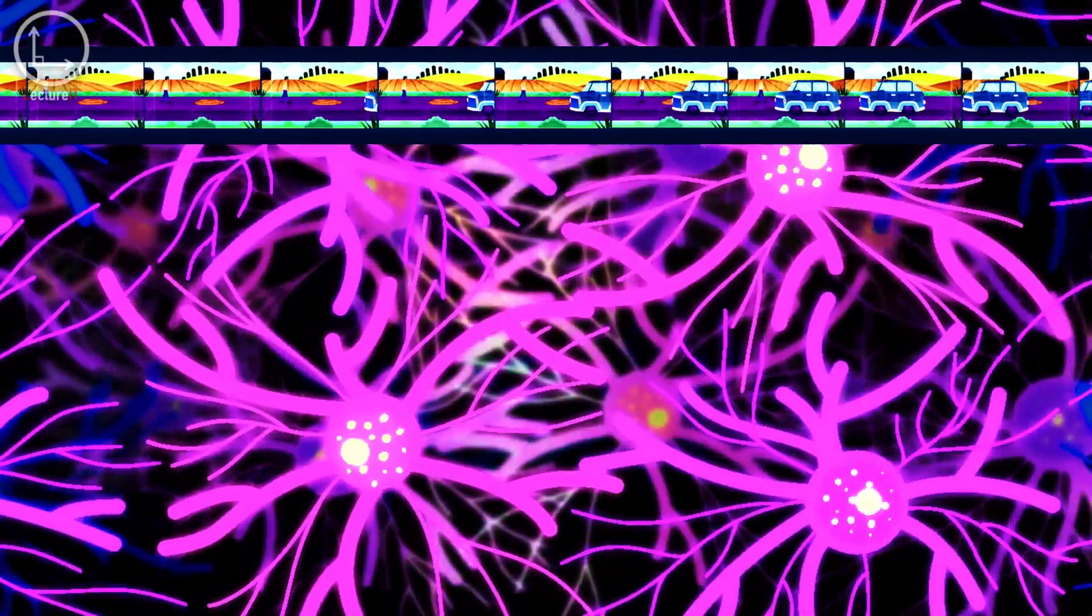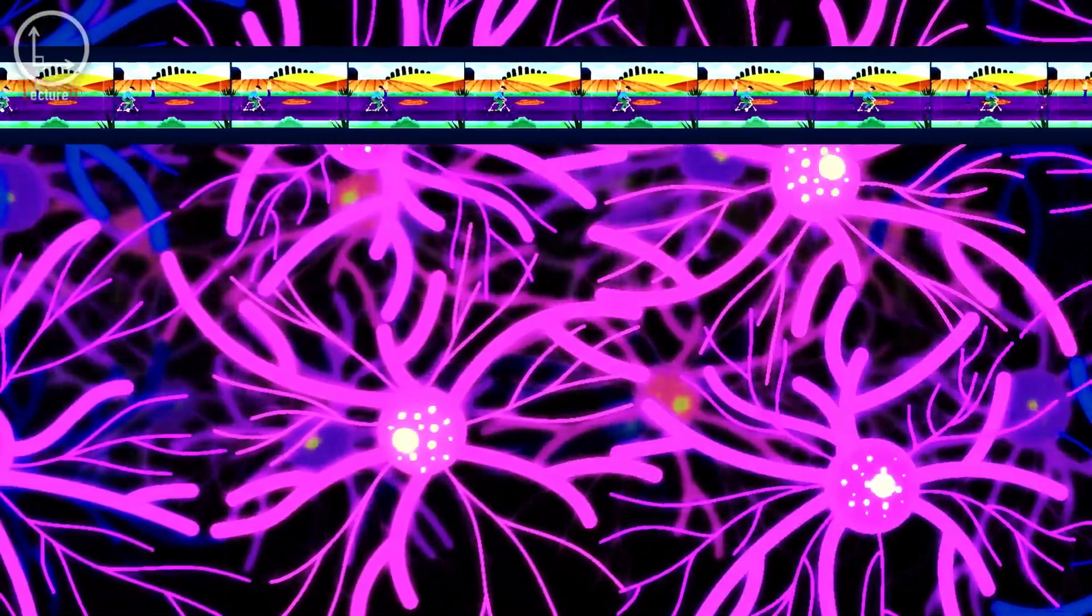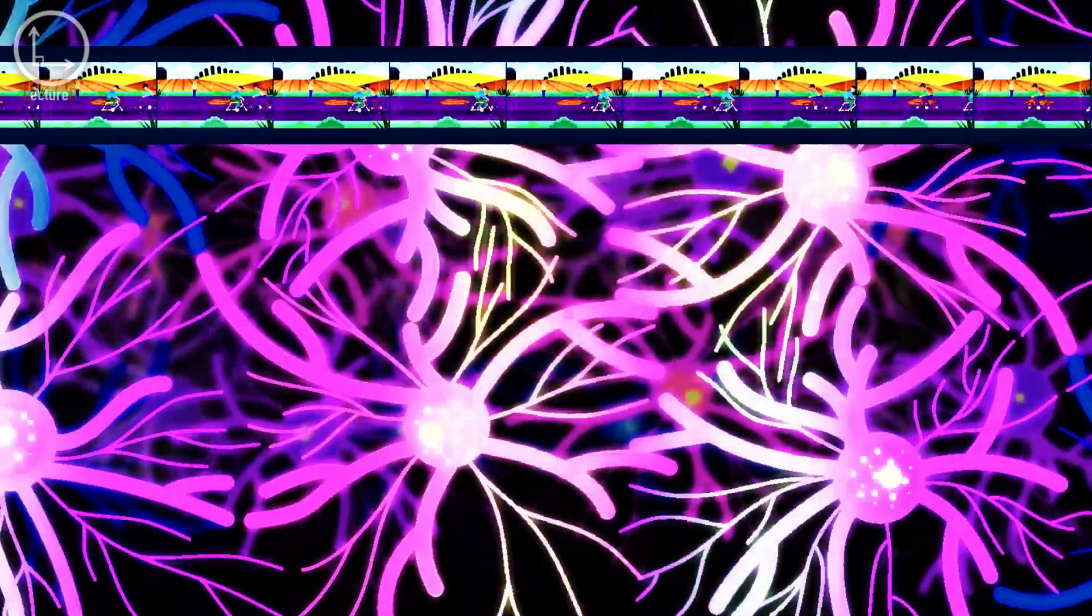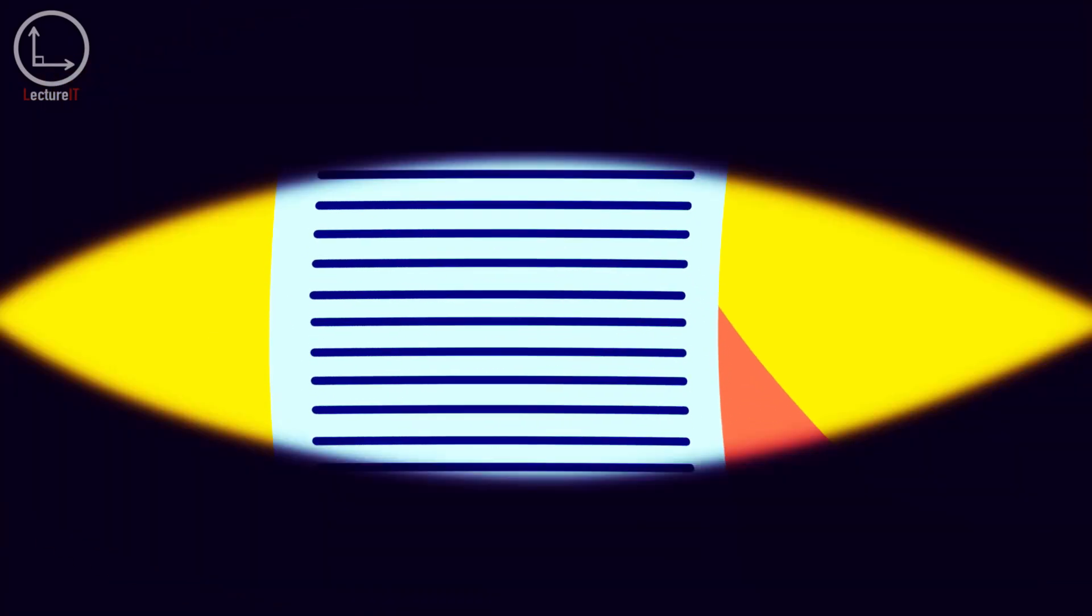This process, known as synaptic consolidation, involves protein deposits that boost signal transmission. The amygdala, an emotional hub, plays a key role.